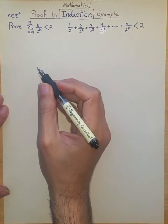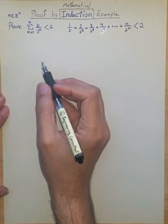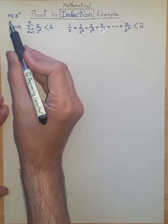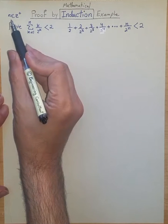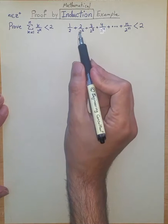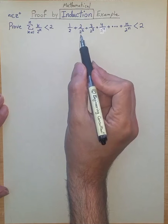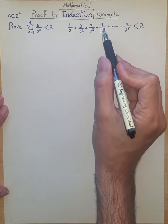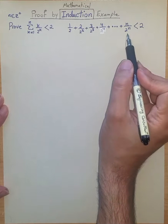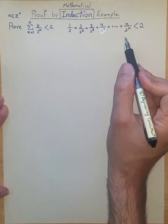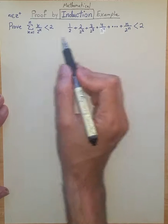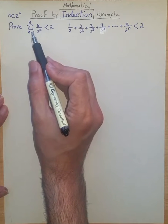An example of proof by mathematical induction: we want to prove that for any positive integer n, the sum 1/2 + 2/4 + 3/2³ + 4/2⁴ + ... + n/2ⁿ is always less than 2, which is also expressed using sigma notation.